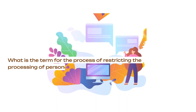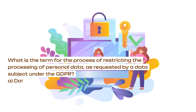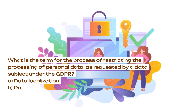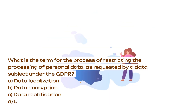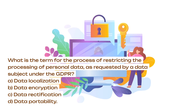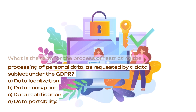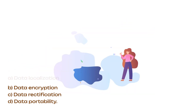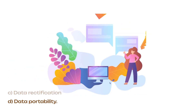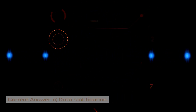What is the term for the process of restricting the processing of personal data, as requested by a data subject under the GDPR? A. Data localization. B. Data encryption. C. Data rectification. D. Data portability. Correct answer: C. Data rectification.